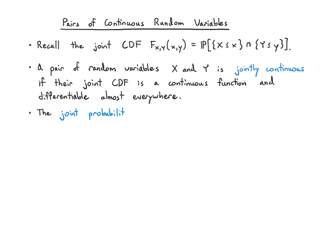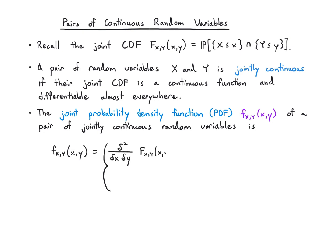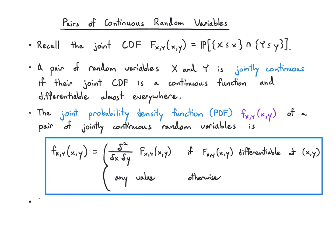The joint probability density function, or joint PDF, f_XY(x,y) of a pair of jointly continuous random variables is the partial derivatives with respect to x and y of the joint CDF. That's true whenever it's differentiable, and if there's a couple of points where it's not differentiable, you can put any value that you like.